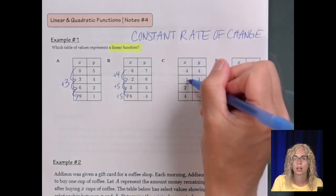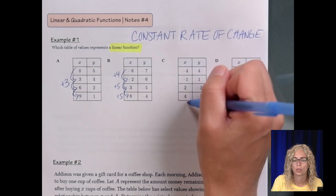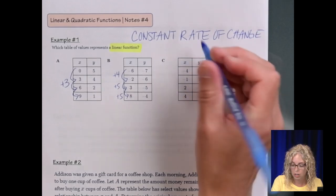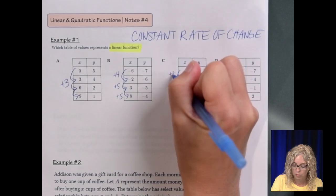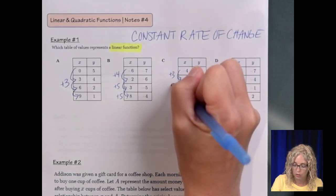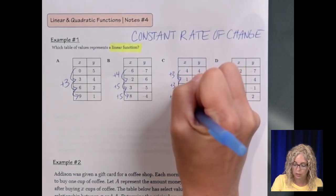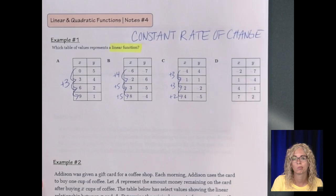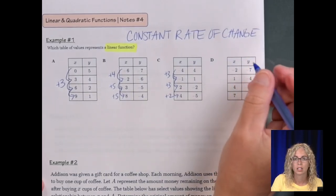And then negative 4 to negative 1, negative 1 to 2, 2 to 4. Well, from negative 4 to negative 1, it's an increase of 3. Negative 1 to 2, increase of 3, but then 2 to 4, increase of 2. Not looking like it's that one.